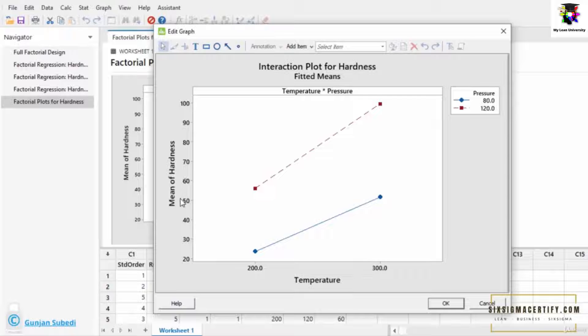Here we have a graph where we get the mean of the hardness on the y-axis and temperature on the x-axis with the legend as pressure. The blue line stands for the pressure at 80 units and red line stands for the pressure at 120 units.